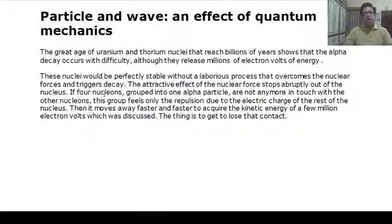Because there is a strong nuclear force inside the nucleus, if four nucleons grouped into one alpha particle are not anymore in touch with the other nucleus, this group feels only the repulsion due to the electric charge of the rest of the nucleus. Then it moves away faster and faster to acquire the kinetic energy of a few million electron volts which was discussed.